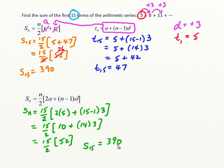So there are two different versions, or two different interpretations, of the sum of an arithmetic series formula. That's how you can find the sum of a certain number of terms when you know where you're starting and you know the common difference — very easy to solve the sum of the terms.